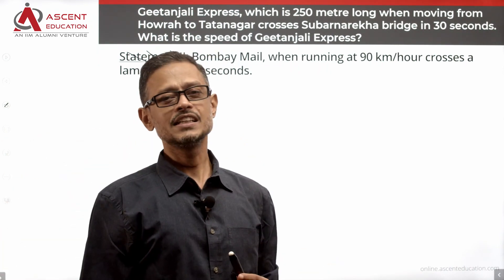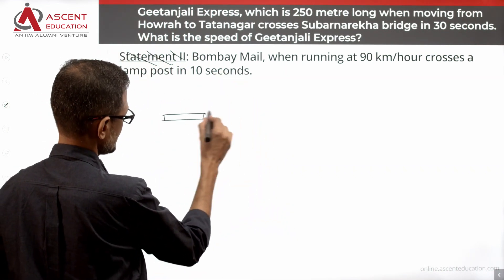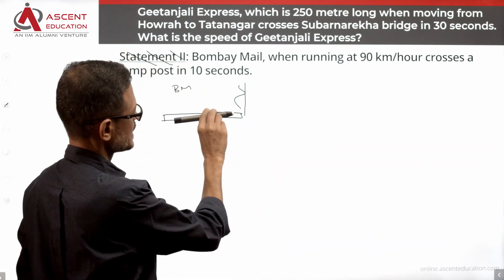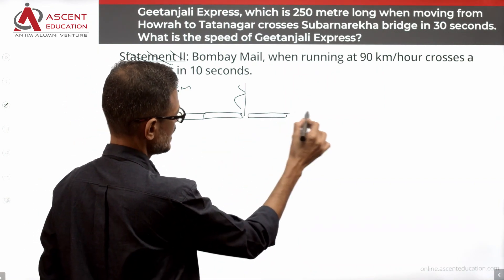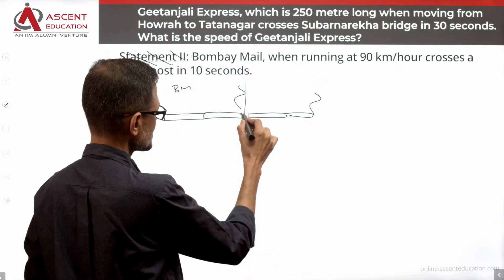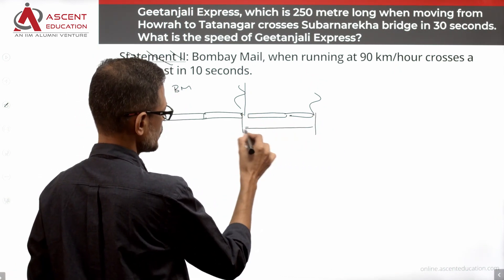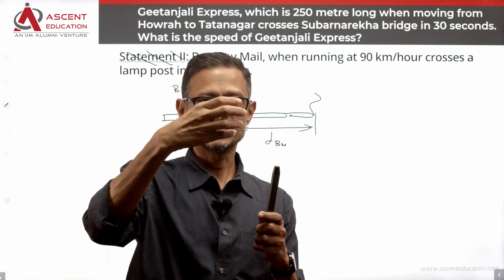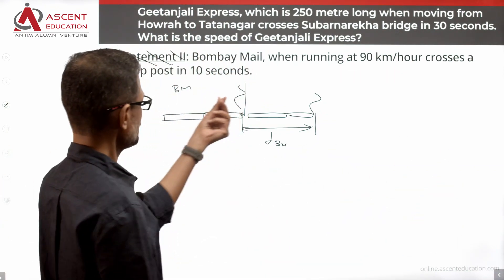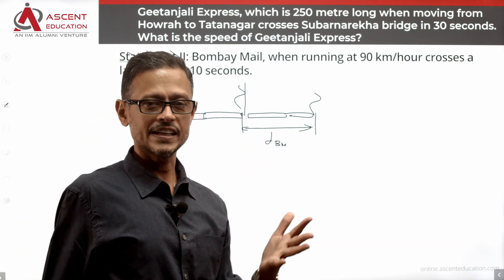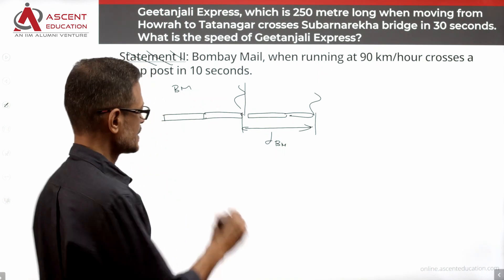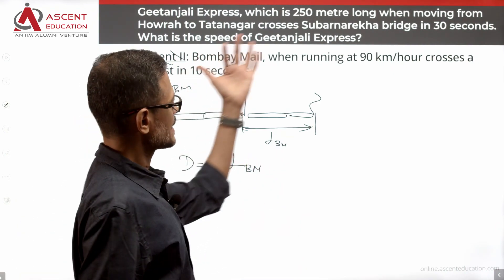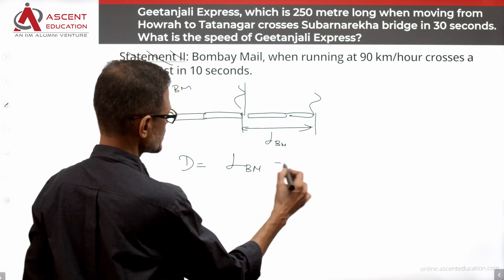When a train crosses a lamppost, this is when the engine is just about to pass the lamppost, and this is when the last compartment has passed it. The distance the train travels equals the length of the train, because the lamppost's thickness is negligible — insignificant compared to hundreds of meters. So when crossing a lamppost, distance traveled equals the length of the train, which in our case is the length of Bombay Mail. Distance equals speed multiplied by time.